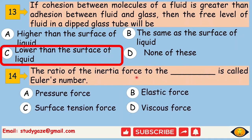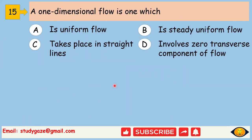The ratio of inertia force to the pressure force is called Euler's number. A one-dimensional flow is one which involves zero transverse component of flow.